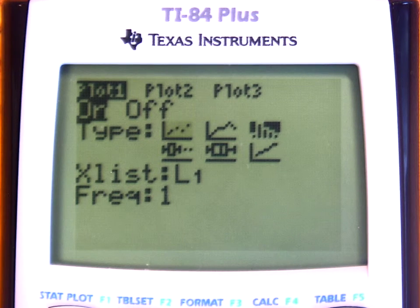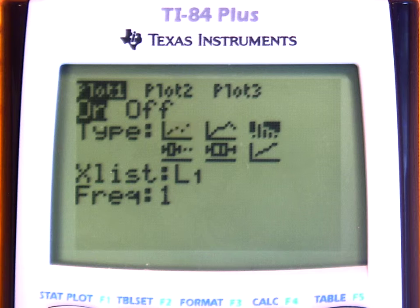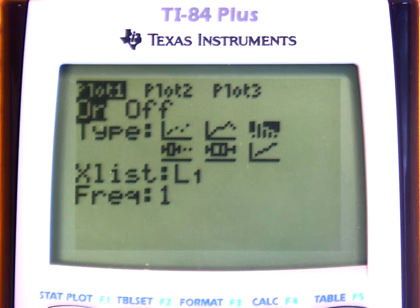Press the down arrow to go to type. Then you have to press the right and left arrows to cycle through to get to the type you want. The type that's right now flashing is the box and whisker plot with the two little dots to the right. That's the one that checks for outliers.